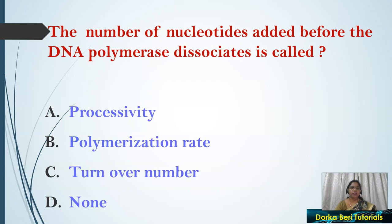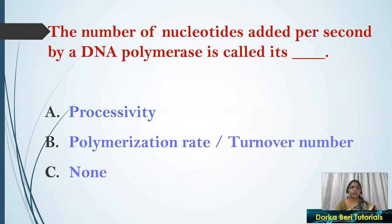Next question: The number of nucleotides added before the DNA polymerase dissociates is called — options: processivity, polymerization rate, turnover number, or none. The answer is processivity. Processivity is the total number of nucleotides added by the DNA polymerase.